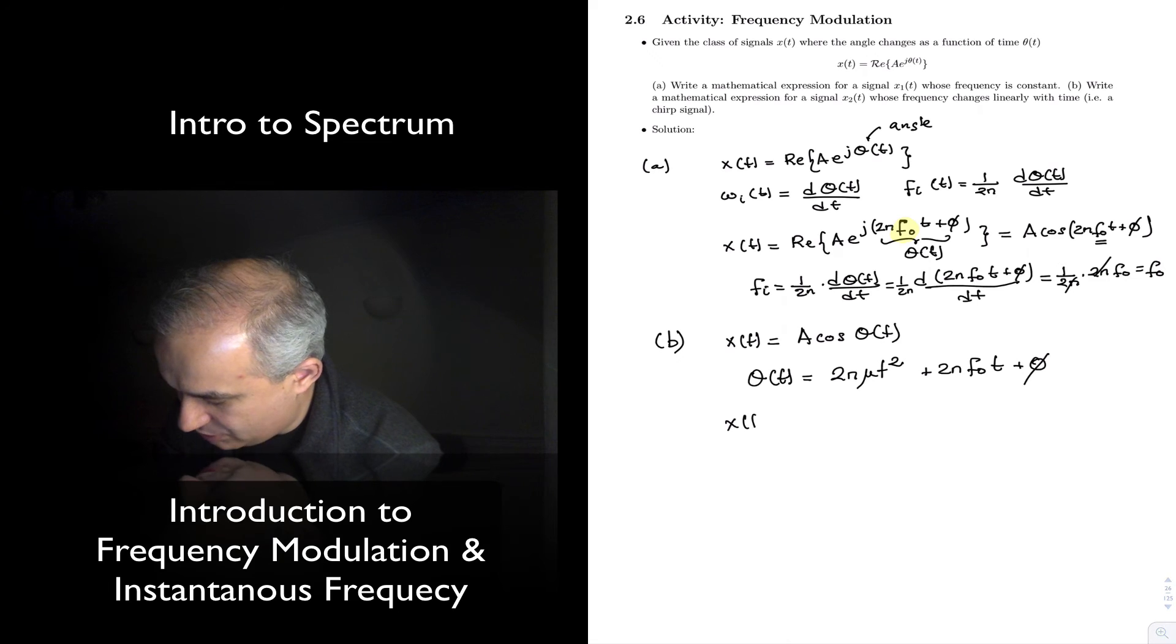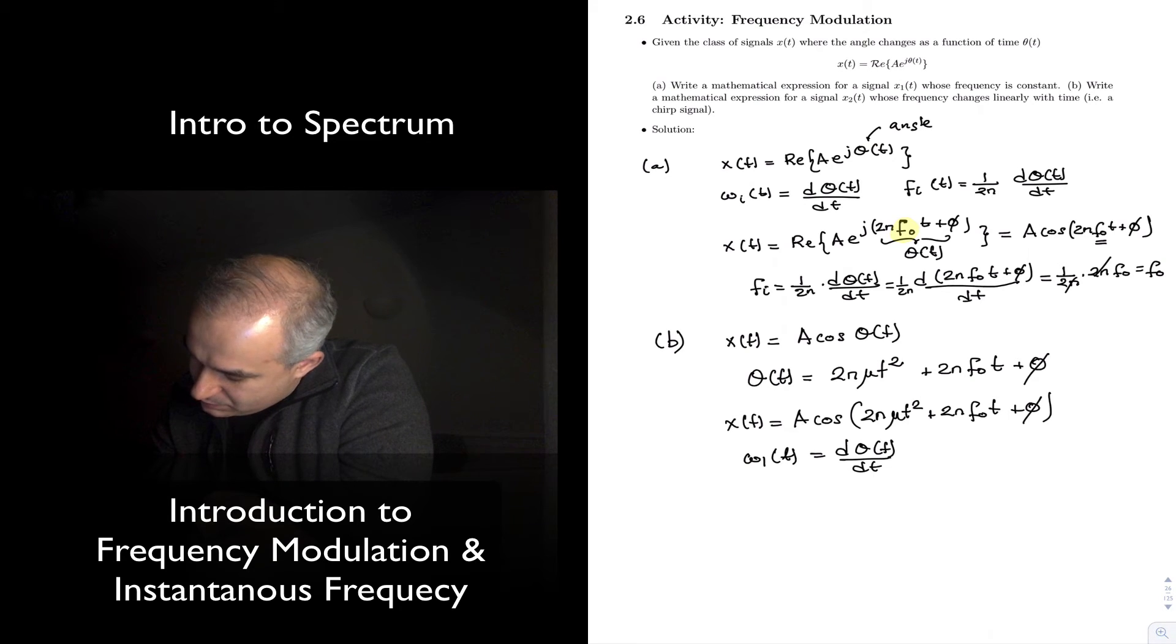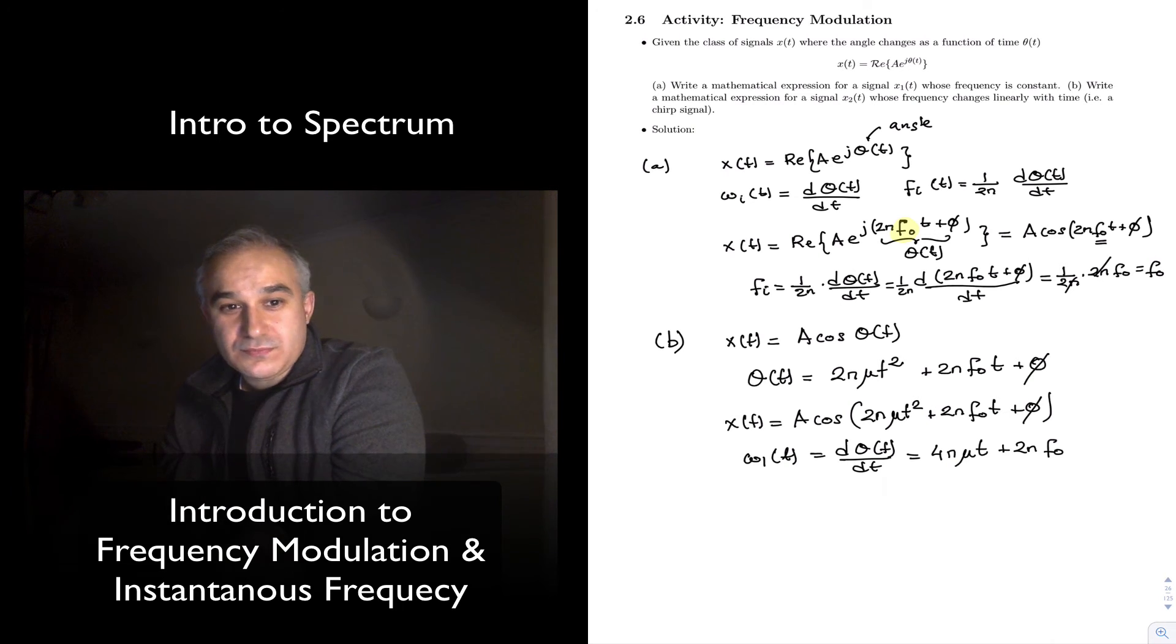So, the equation that we are talking about, imagine that we have a signal like this, cosine of 2π μ t squared plus 2π f0 t plus θ. If we do the derivative, we want to find the radian instantaneous frequency in radians per second, we just differentiate it, and so we have 4π μ t plus 2π f0, right there.